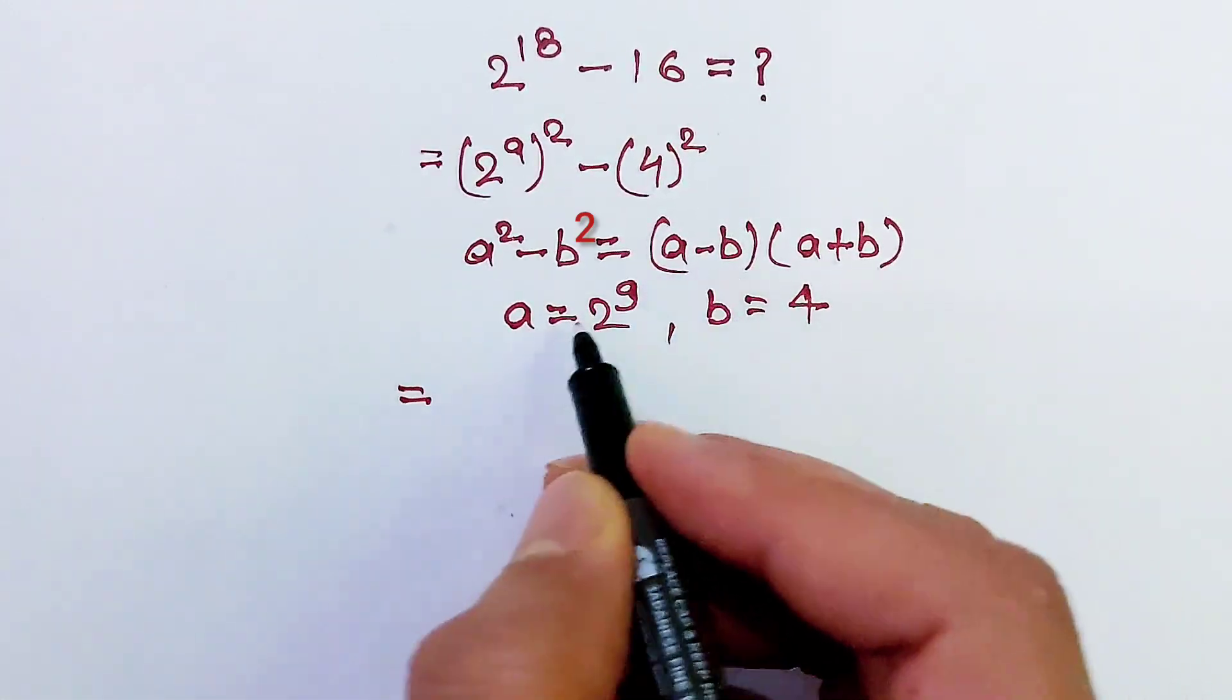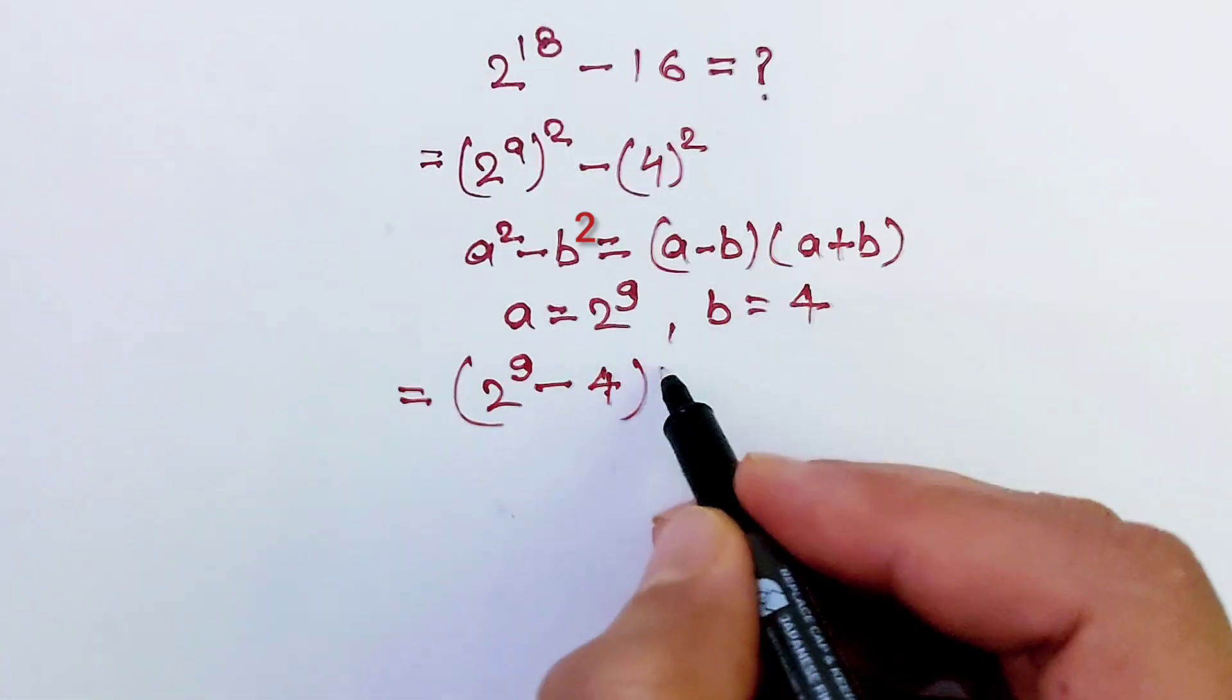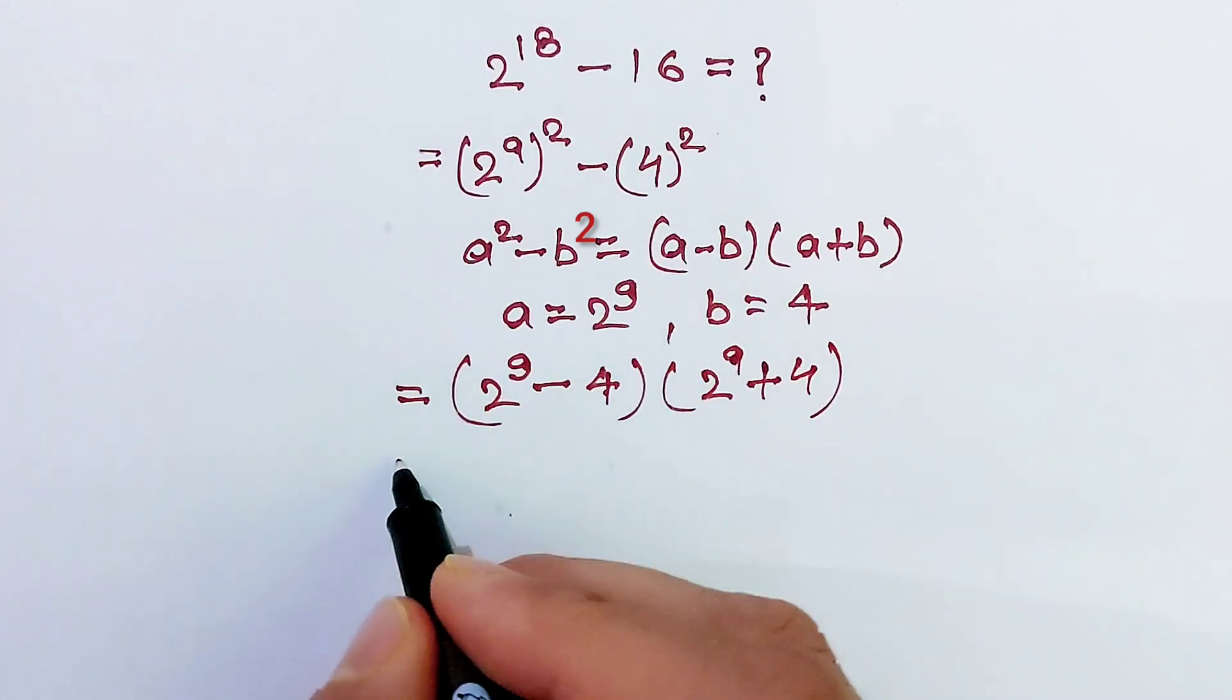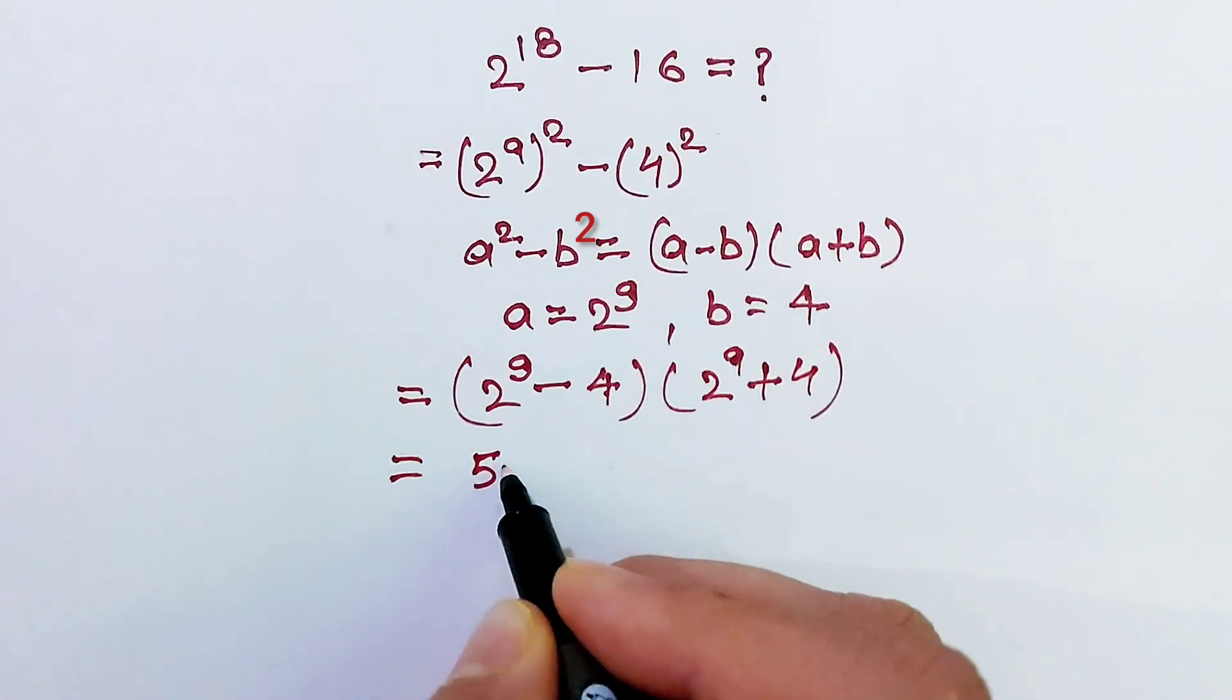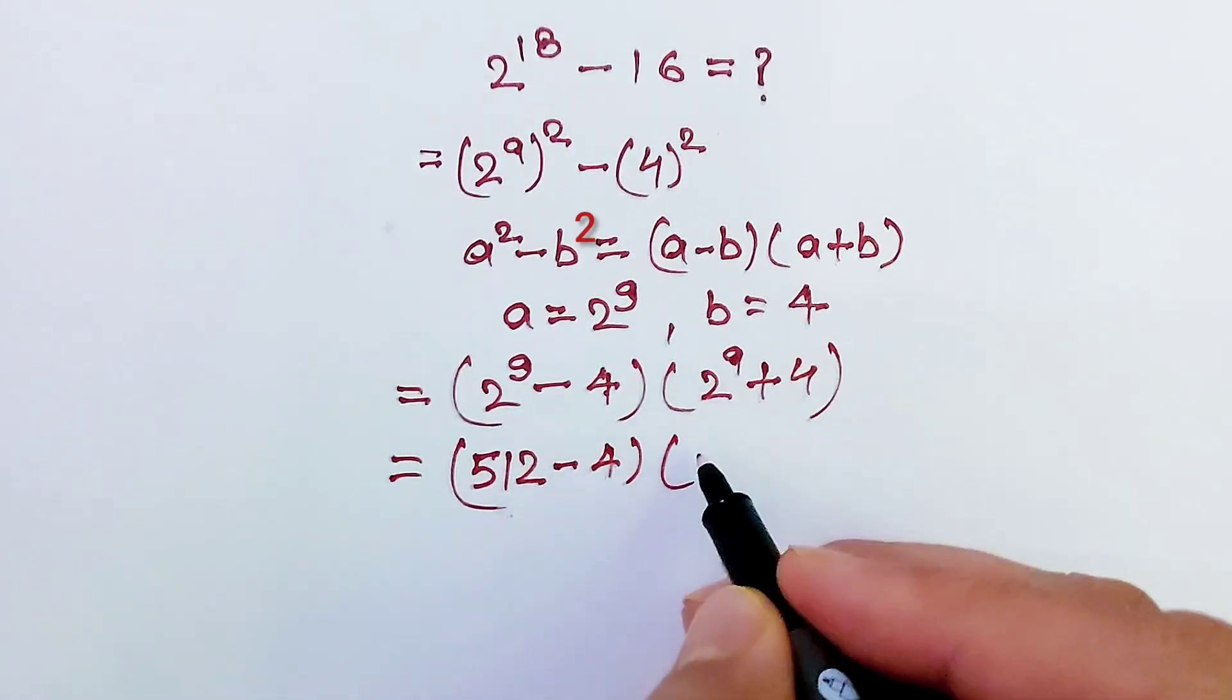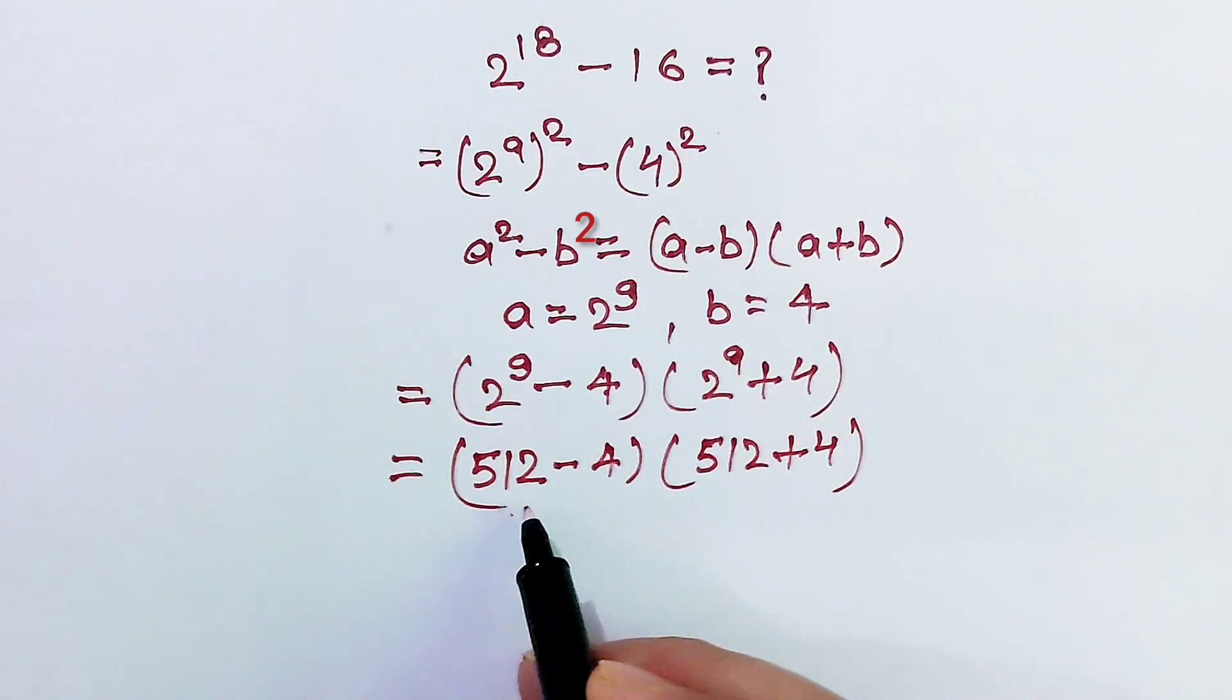a minus b, 2 power 9 minus 4, times 2 power 9 plus 4. And we know that 2 power 9 is equal to 512 minus 4 and this 2 power 9, 512 plus 4. Now we will multiply this term with this term.